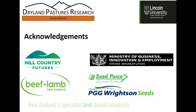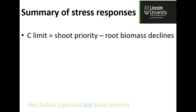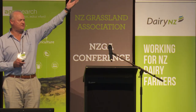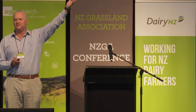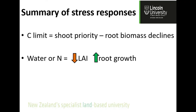What I want us to understand is how your plant responds to different things that happen. If you take nothing else away from this lecture, remember this: if your plant is limited for carbon, its priority will be to grow leaves and its root biomass will decline. If it's limited for carbon, it means it hasn't got its photosynthetic area available — you've taken the leaves off too quickly — and it will take carbon from its roots and put it into its shoots.